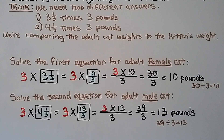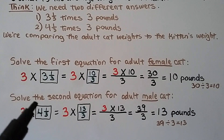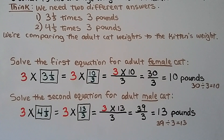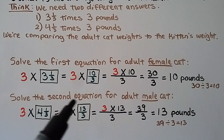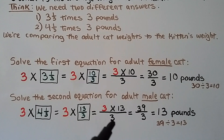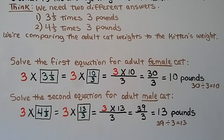Now for the adult male cat, we have 3 times 4 and 1 third. We convert to a fraction greater than 1: 4 times denominator 3 is 12, plus the numerator 1 is 13, written over 3 — that's 13 thirds. We multiply the whole number to the numerator: 3 times 13 equals 39, over denominator 3. We write 39 thirds in simplest form: 39 divided by 3 equals 13. The average adult male cat is 13 pounds.